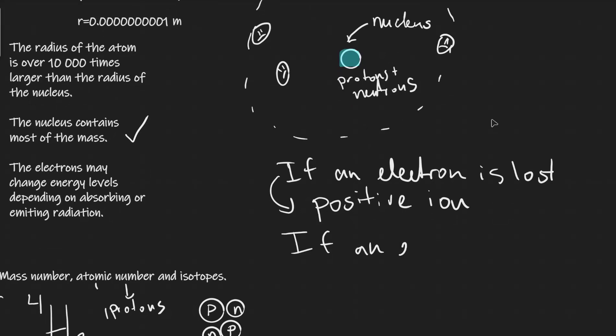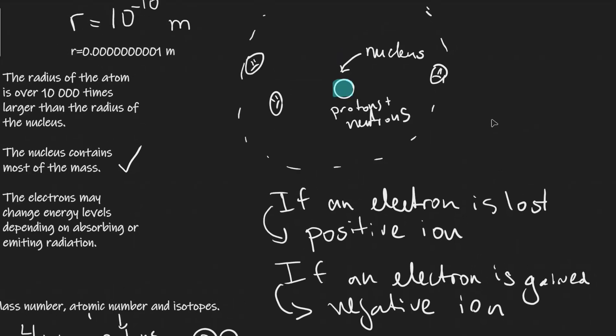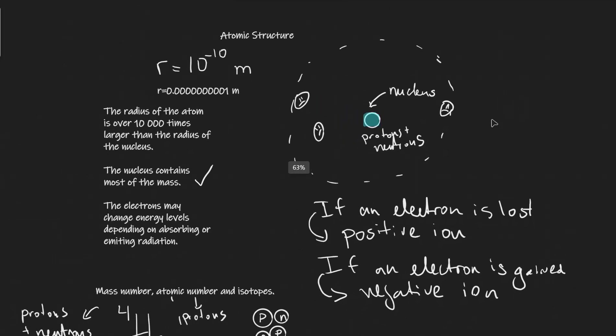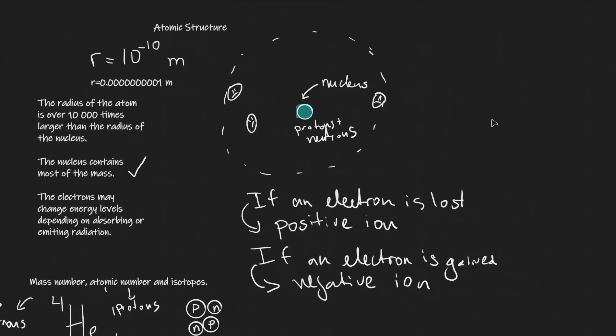And if an electron is gained, we have a negative ion. And in normal atoms, the amount of electrons is equal to the number of protons.